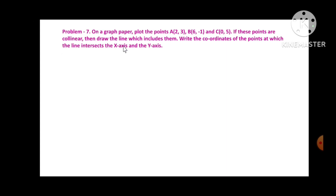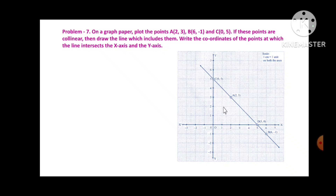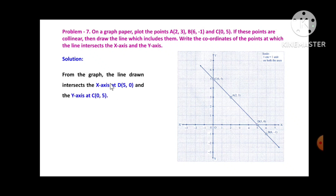Problem 7: On the graph paper, plot points A(2,3), B(6,-1), and C(0,5). If these points are collinear, draw the line through them. Write the coordinates where the line intersects the x-axis and y-axis. After plotting, the line intersects the x-axis at D(5,0) and the y-axis at (0,5).